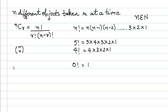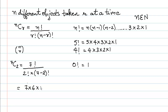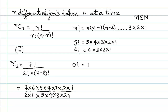Let us take a concrete example: 7C2. The formula gives 7 factorial upon 2 factorial multiplied by (7 minus 2) factorial. So we have 7 into 6 into 5 into 4 into 3 into 2 into 1, the whole upon 2 into 1 multiplied by 5 into 4 into 3 into 2 into 1. The 5, 4, 3, 2 terms cancel out between numerator and denominator, leaving us with 7 into 6 upon 2 into 1.